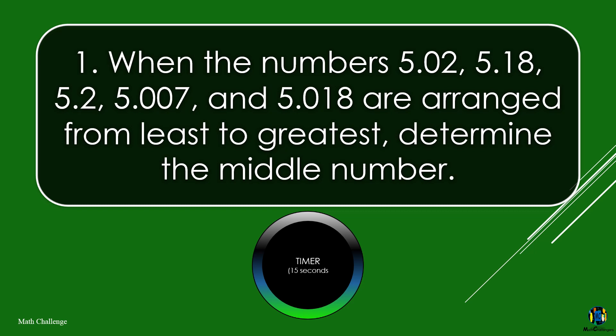When the numbers 5 and 2 tenths, 5 and 18 hundredths, 5 and 2 tenths, 5 and 7 thousandths, and 5 and 18 thousandths are arranged from least to greatest, determine the middle number.